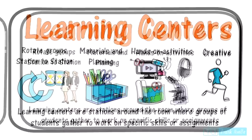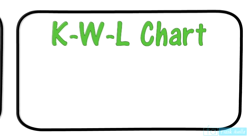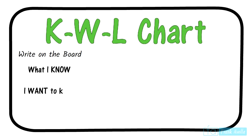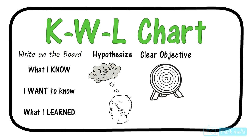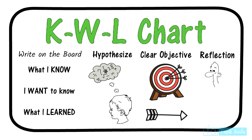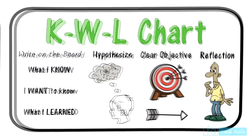Next is the KWL chart. Teachers use this activity by writing three columns on the whiteboard: What I Know, What I Want to Know, and What I Learned. The class fills in those sections on a given topic — say, what you already know about George Washington, what you want to know about him, and lastly what you learned at the end of the lesson. As an added element, students can hypothesize what they think they'll have learned. Educators like the KWL chart because there is a clear objective integrated into the lesson — it's very direct and targeted. When done, the teacher and students take time to reflect on what was learned. This assignment works very well with a shared Google Doc where students write in their responses.